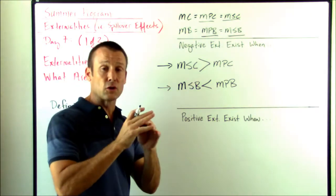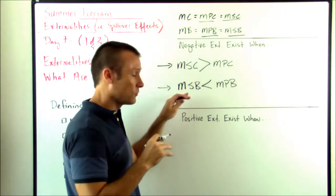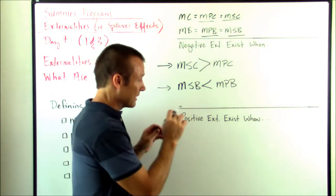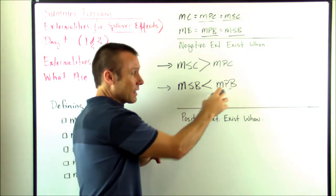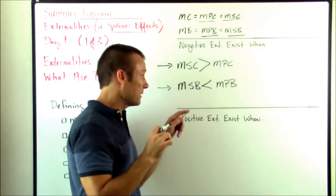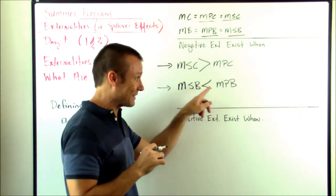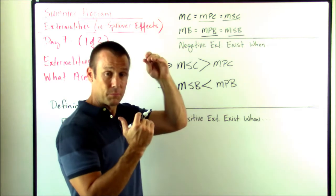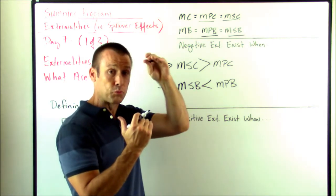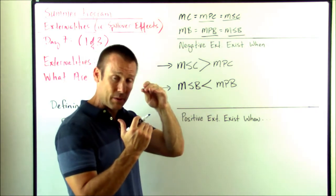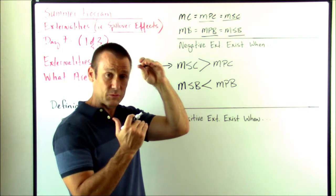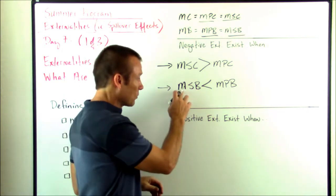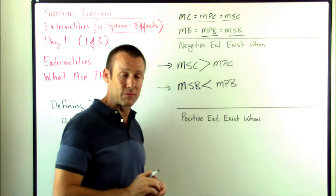Remember, the MSB takes into account the MPB, but why is it less than the MPB? Because we've got this benefit, but then there's a cost associated with it, which brings down the benefit. That third-party spillover cost brings down the total benefit. So the total benefit — marginal social benefit — is less than the private benefit.